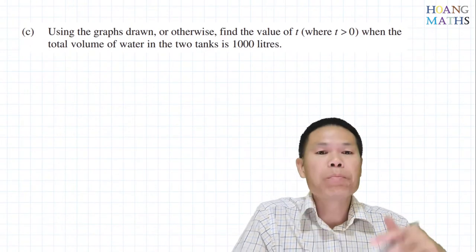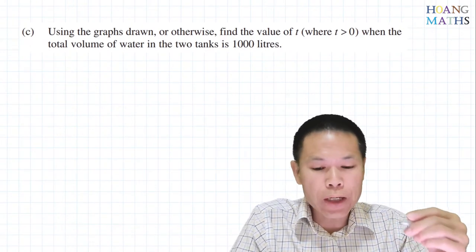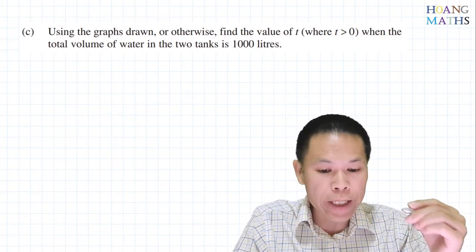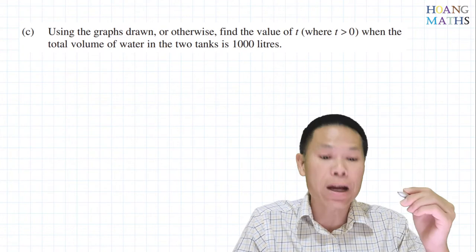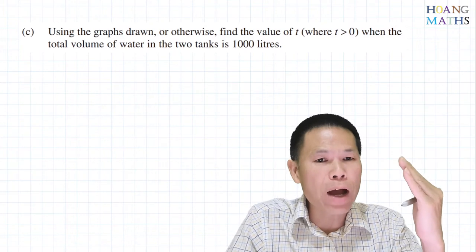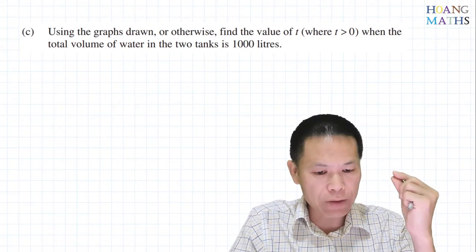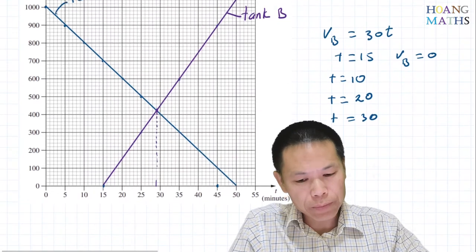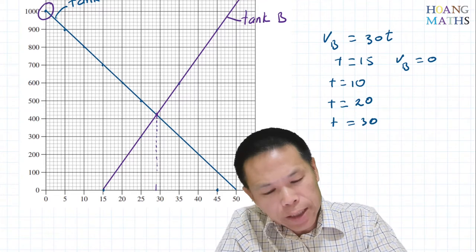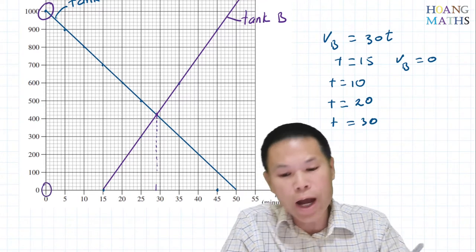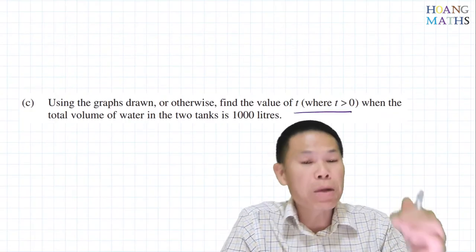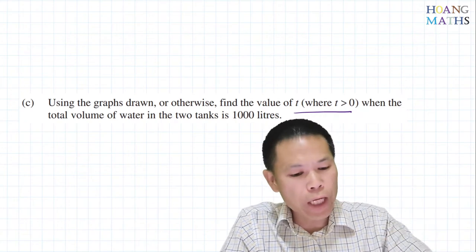Last one, Part C: using the graph, find the value of t when the total volume of water in the two tanks is 1000 liters. We need to find volumes from Tank A and Tank B on the graph that add up to 1000 liters. At t = 0 Tank A is 1000 and Tank B is zero, but the question requires t greater than zero, so we can't use that.